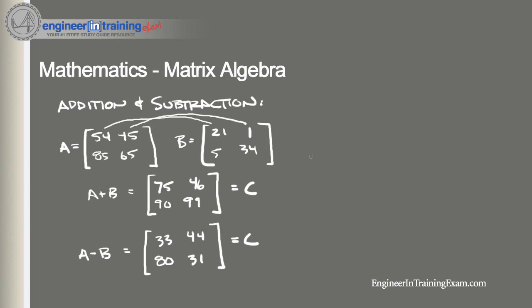The order of the matrices when added is not important. So in other words, if we have A plus B, since order is not important, that is also equal to B plus A.